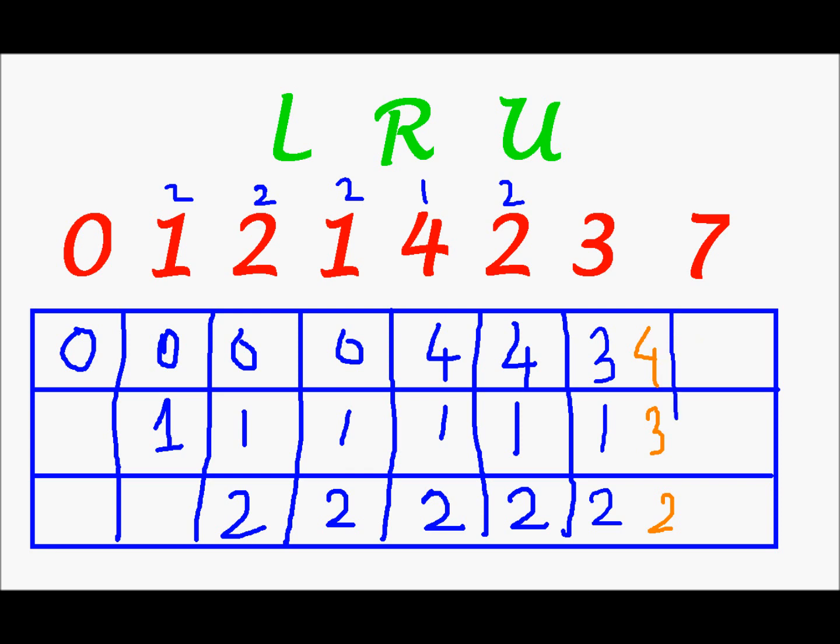The next to enter is 7. And out of 3, 1 and 2, 1 has been used twice, 2 has been used twice, and 3 has been used just once. So 3 will be the one to leave. So in place of 3 we shall write 7. It will be 7, 1 and 2.